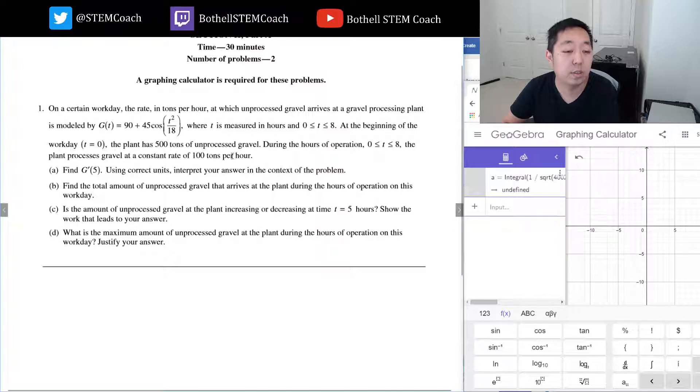At the beginning of the workday, the plant has 500 tons of unprocessed gravel. During the hours of operation, the plant processes gravel at a constant rate of 100 tons per hour. Using correct units, interpret your answer in context of the problem. Find g'(5).